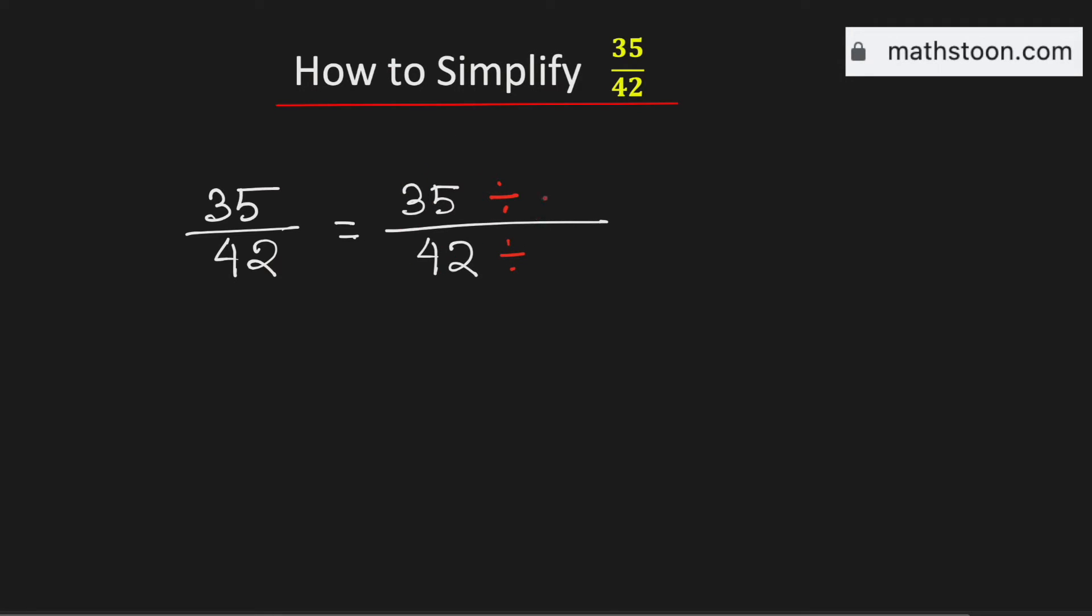So to simplify it, we need to divide them by 7. As a result, we will get 5 over 6.